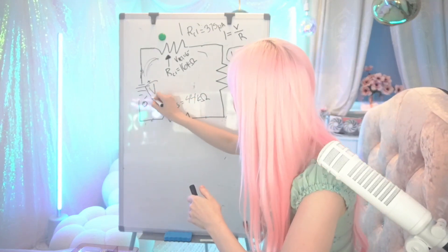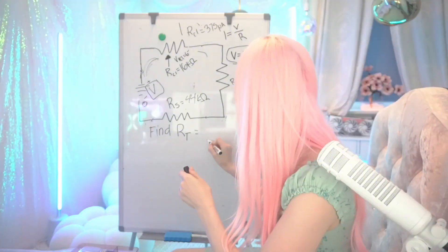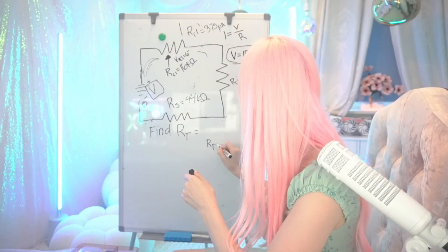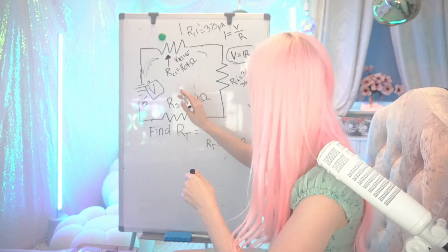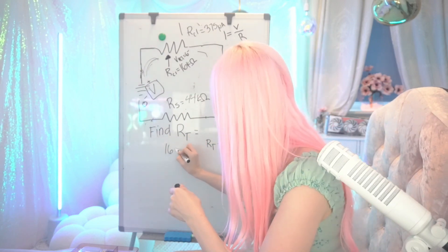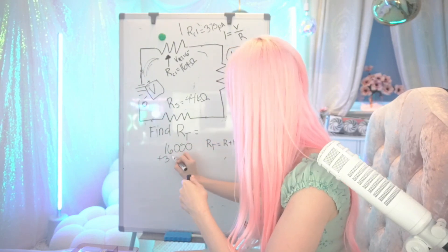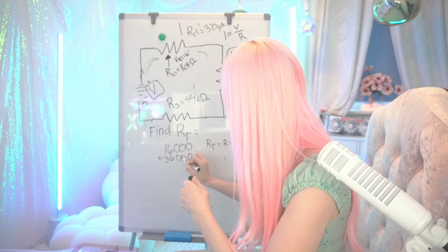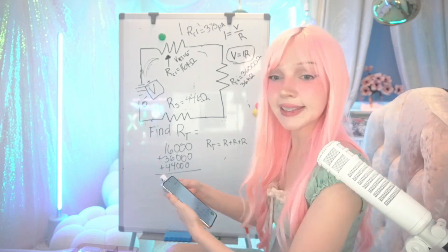Because we are solving for V over here. And that's super easy to do. RT is just going to be the sum of all of our resistors. So we're going to add up 16,000 plus 36,000 plus 44,000. 96,000! Let's go!